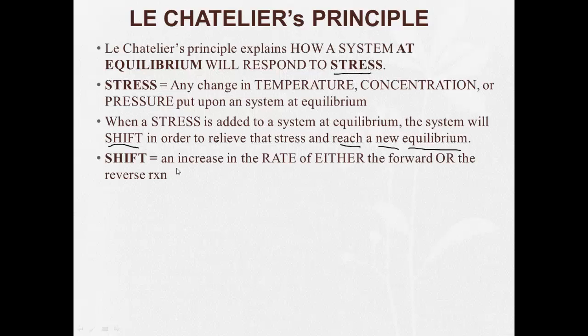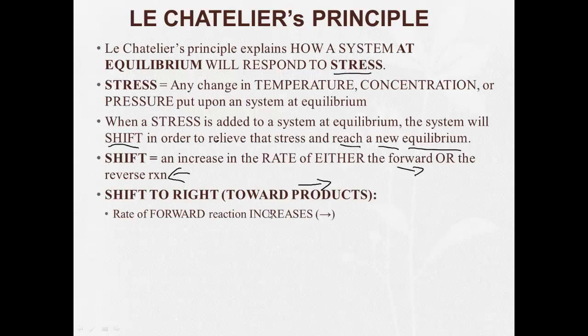And a shift is an increase in the rate of either the forward or the reverse reaction. If the reaction shifts to the right, towards the products, the rate of the forward reaction increases, and it favors the products. It means the amounts or the concentrations of the products increase.